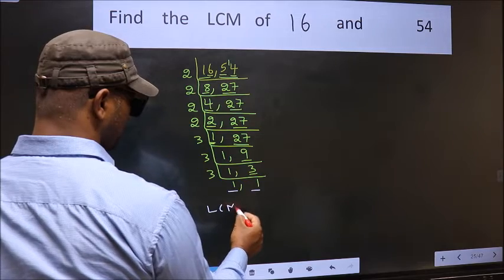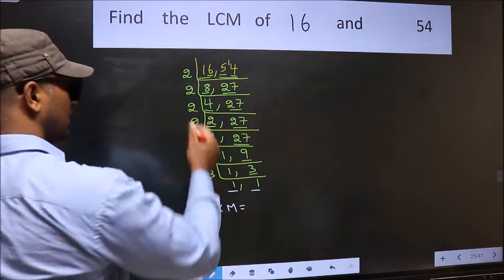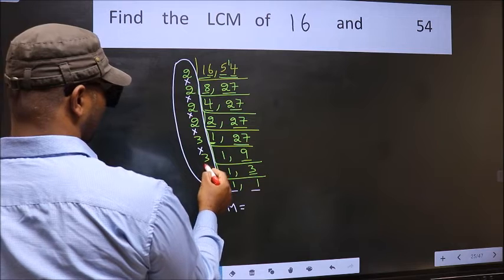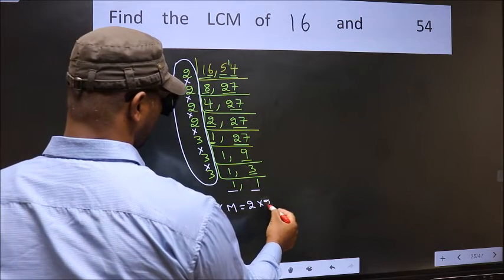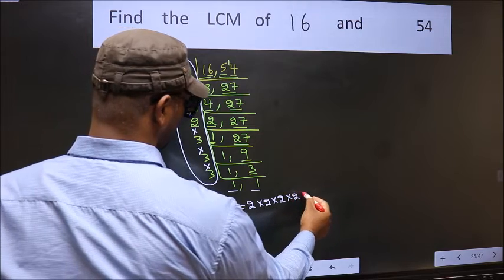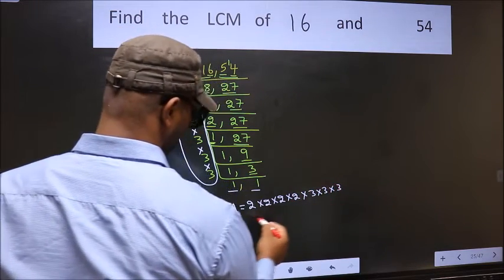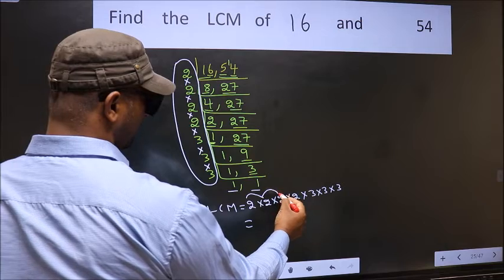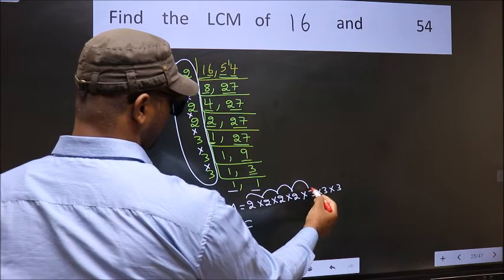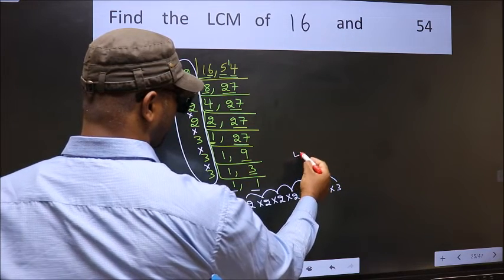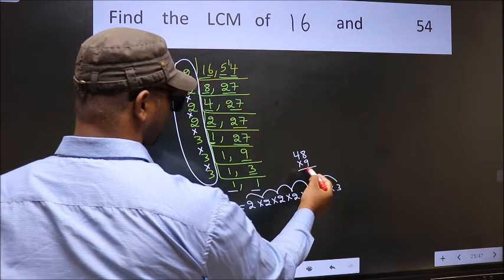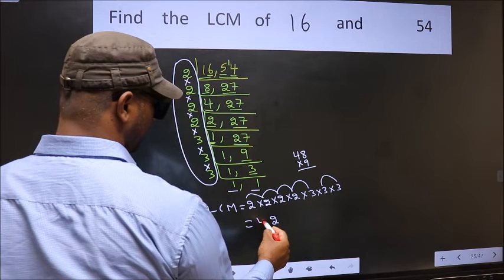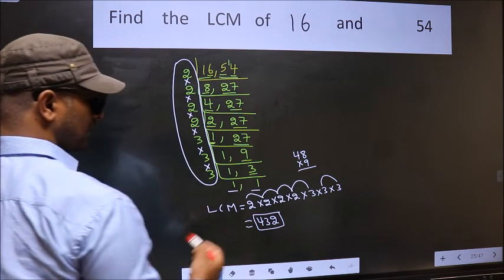So our LCM is the product of these numbers: 2 into 2 into 2 into 2 into 2 into 3 into 3 into 3. Let us multiply these numbers: 2 into 2 is 4, into 2 is 8, into 2 is 16, into 3 is 48. 3 into 3 is 9. So 48 into 9: 9 times 8 is 72, write 2 carry 7; 9 times 4 is 36 plus 7 is 43. So 432 is our LCM.